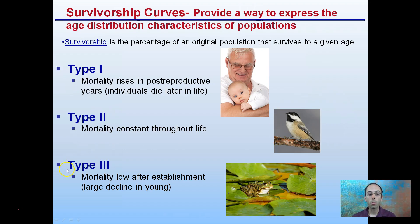Then there's type 3, where mortality is low after establishment, meaning there's a large decline in the young. Not many survive to older age, but once they get to about that mid-age, many will survive.